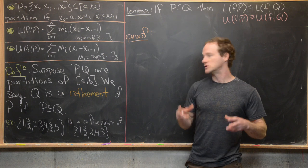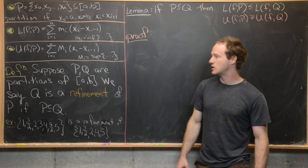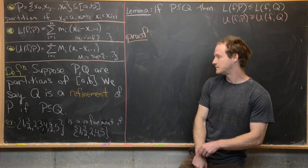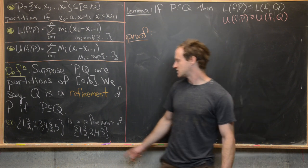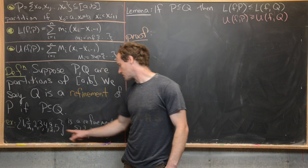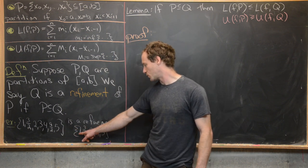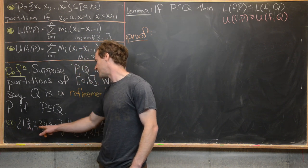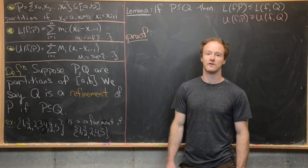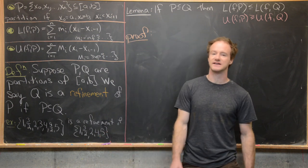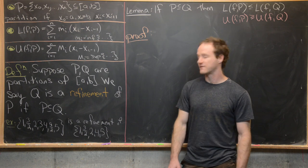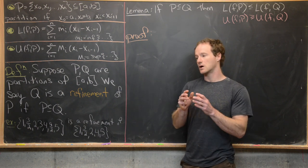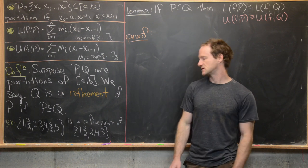Now we want to introduce the notion of a refinement. Suppose that P and Q are both partitions of [a,b]. We say that Q is a refinement of P if P is a subset of Q. For example, one partition has points {1, 3/2, 2, 4, 5}. The refinement has all of those points plus the additional points 3 and 9/2, making it a refinement of the original partition of [1,5]. We're refining our study of the interval by chopping it up into more pieces.